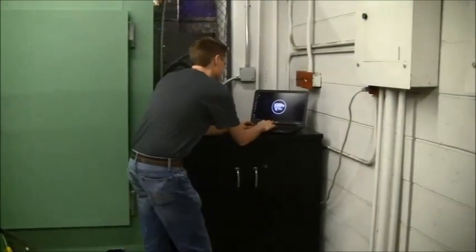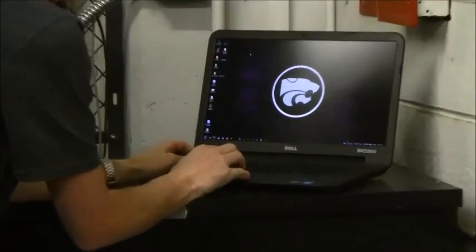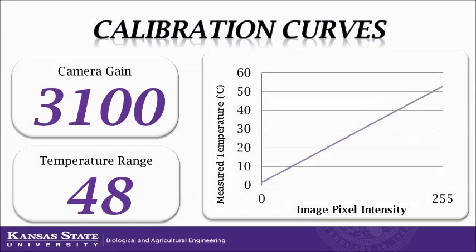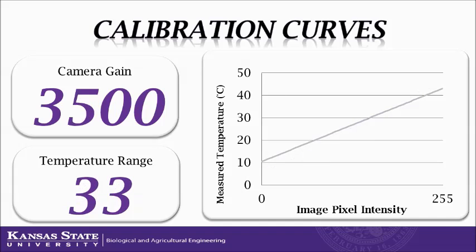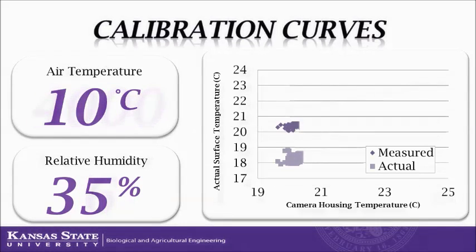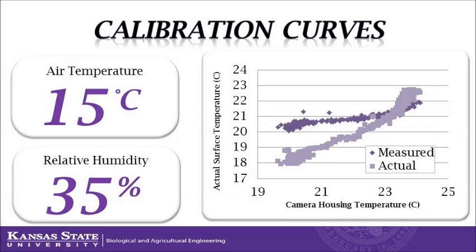Our preliminary testing proved very positive as we determined the range of temperatures within the camera under different camera settings. By evaluating the camera settings, the camera could be set for the range of temperatures expected in the field or laboratory. These tests proved very positive, but further testing was needed to take into account variables like humidity and air temperature that could skew this relationship. By controlling the air temperature, we could change the temperature of the camera to observe the extent temperature influences the measurement accuracy, as shown in the graph on the right where the dark purple is the measured temperature and the light purple is the actual temperature of the surface.